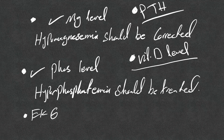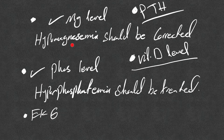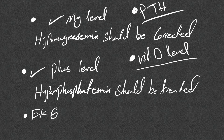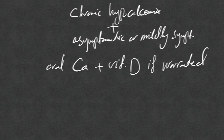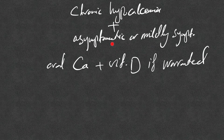In all patients with hypocalcemia, check vitamin D level, magnesium level — because hypomagnesemia must be replaced or hypocalcemia will be very difficult to correct, similar to hypokalemia — phosphorus level, since hyperphosphatemia should be treated because high phosphorus decreases free calcium, and check an EKG to evaluate the QTc. Prolonged QTc requires urgent treatment.